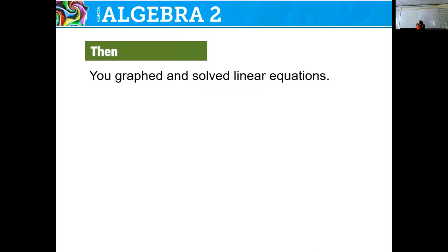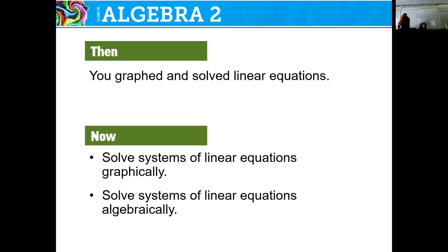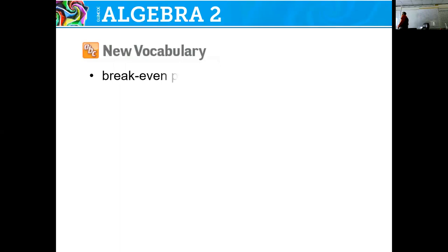What we've previously done is graphed and solved linear equations and linear inequalities — that was section 1.5. Now we're going to solve systems of linear equations graphically and algebraically. Graphically is a simple easy way to solve but it's not the most exact — the best we can do is an estimation. Algebraically we can prove it using two methods: substitution and elimination. So here is your new vocabulary.